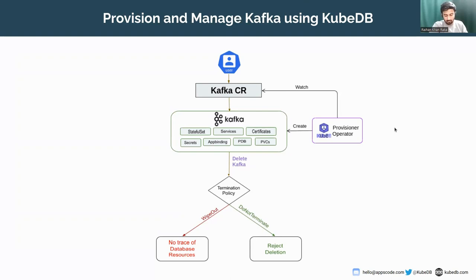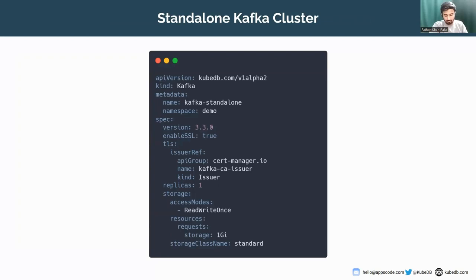Now let's look at how to perform Kafka clustering. Kafka has two types of clustering methodologies in KRaft mode. One is combined clustering and the other is topology clustering. In a combined cluster, each node has both controller and broker process roles in its configuration — they act as both controller and broker. You can also deploy a standalone Kafka cluster, which is just a single node. Let's see how to deploy it using a simple YAML with the Kafka custom resource definition.